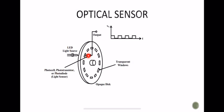An LED source is aligned on one side of the disk so that its light can pass through the transparent windows of the disk. As the disk rotates, the light will alternately pass through the transparent windows and be blocked by the opaque sections. A photo detector is fixed on the other side of the disk and detects this variation of light. The output of the detector after signal conditioning is a square wave.